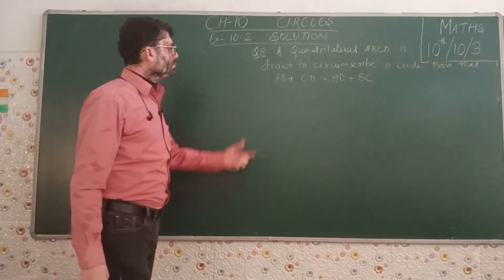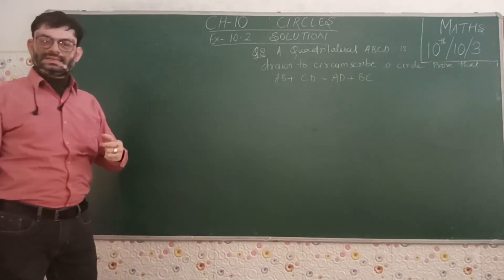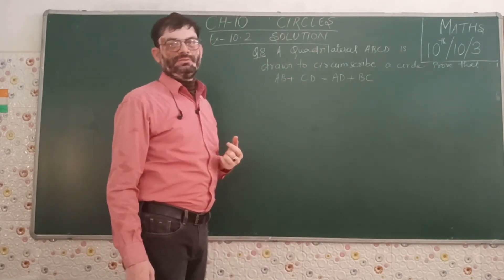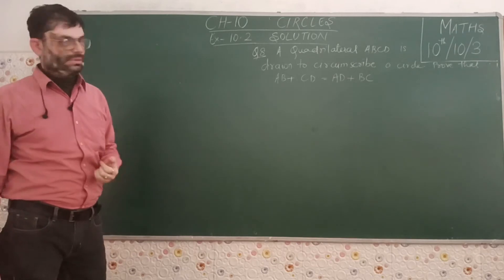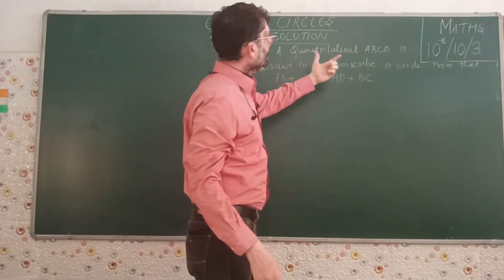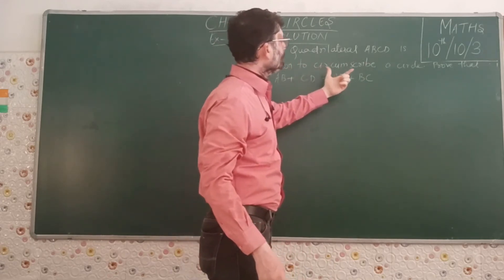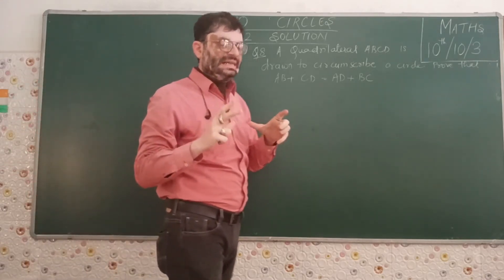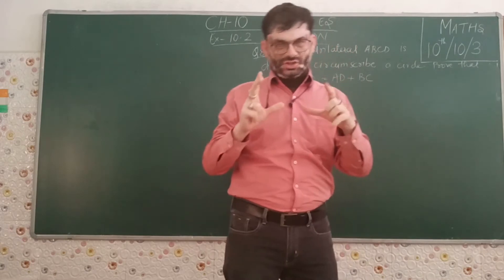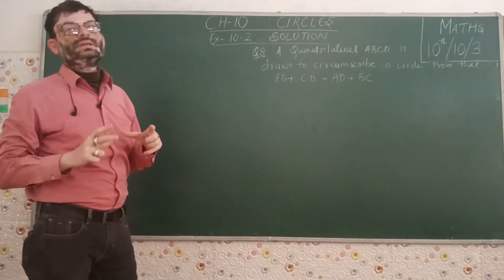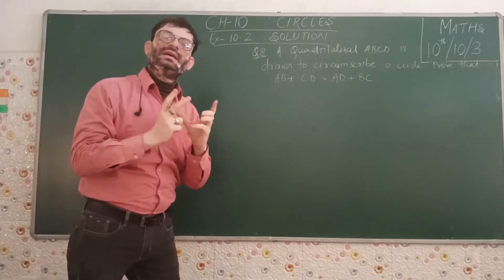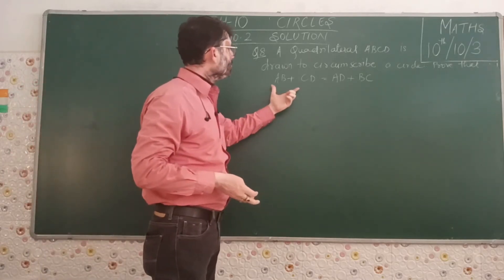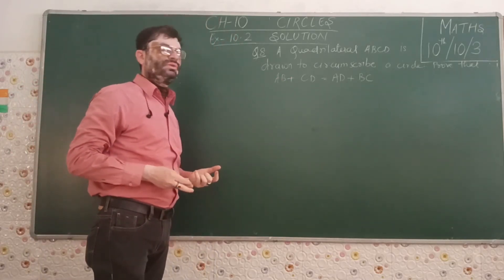Questions 5, 6 and 7 are similar types we have already done, so you can practice those yourself. Moving on to question number 8: a quadrilateral ABCD is drawn to circumscribe a circle — meaning the circle lies completely inside the quadrilateral touching each side. We have to prove that AB + CD = AD + BC.